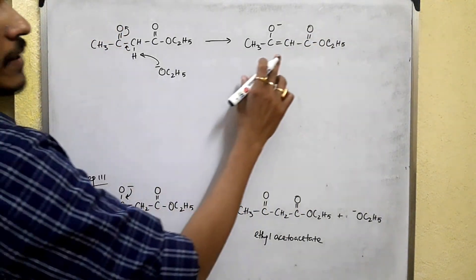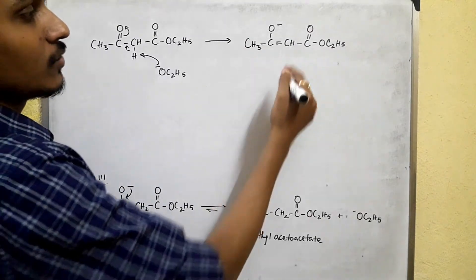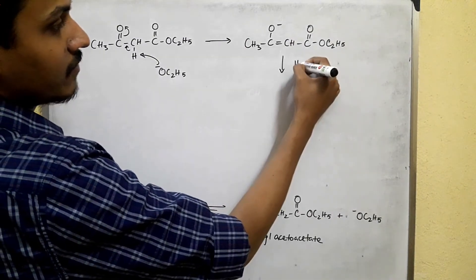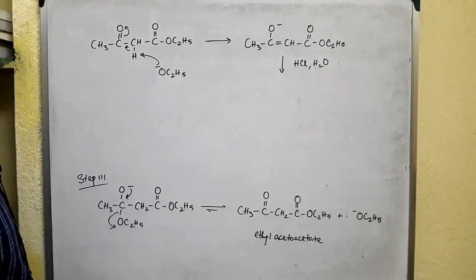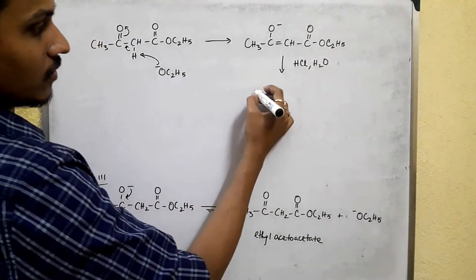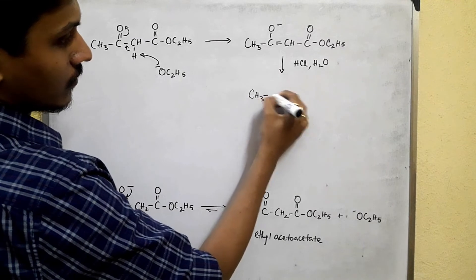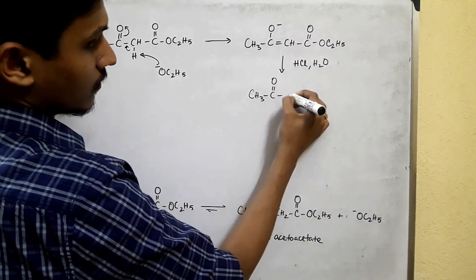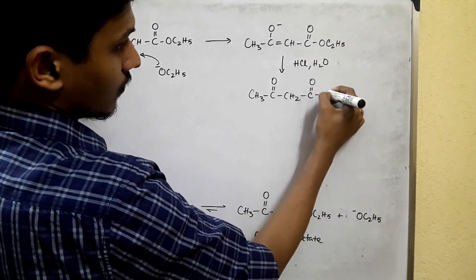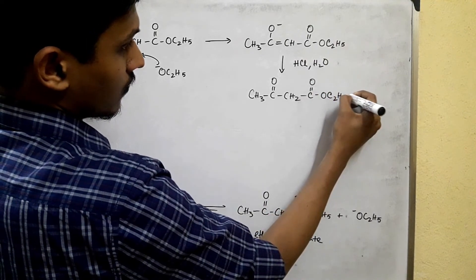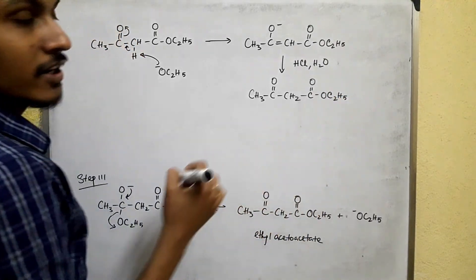Now this stable enolate ion on acidic workup gives the product ethyl acetoacetate itself, or the beta-ketoester.